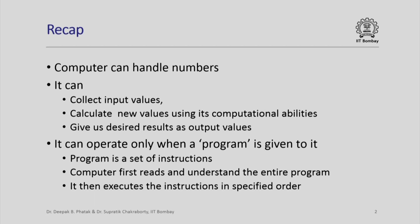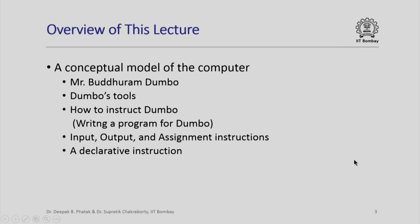This is a phase in which the computer reads and understands the entire program, and then it executes the instructions of the program in specified order. We have invented a character and in this lecture we are going to visit that character. His name is Mr. Buddhuram Dumbo. Buddhuram is a Hindi word which actually rhymes with Mr. Dumbo in English — the simpleton character, not very intelligent, cannot think on his own. However, he can diligently perform the actions he is capable of performing, provided we give him instructions for doing each and everything. In short, Mr. Buddhuram Dumbo does not do anything on his own.